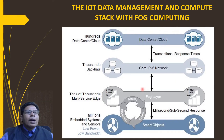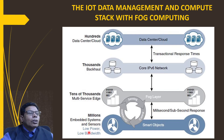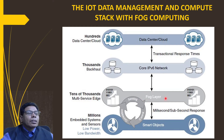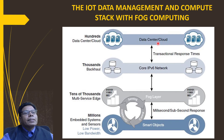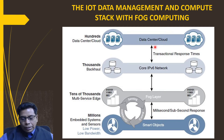The IoT data management and compute stack with fog computing is shown in this figure. At the bottom we have millions of embedded systems and sensors with low power and low bandwidth — the smart objects. Then we have tens of thousands of multi-service edge devices forming the fog layer, where collection, sensing, and control are performed. Above that, thousands of backhaul connections via an IPv6 network link to hundreds of data centers or cloud servers.